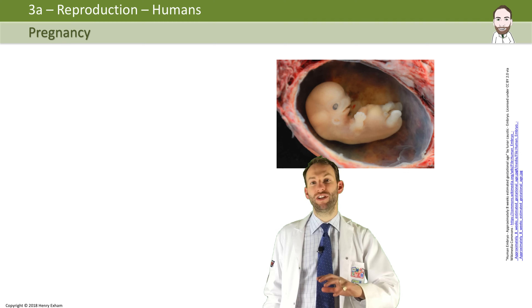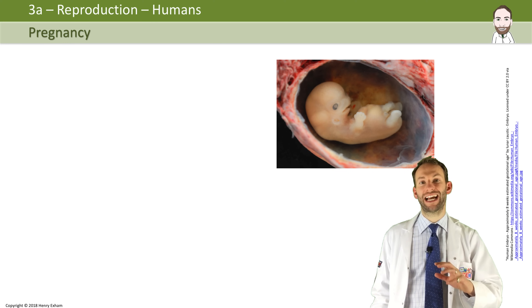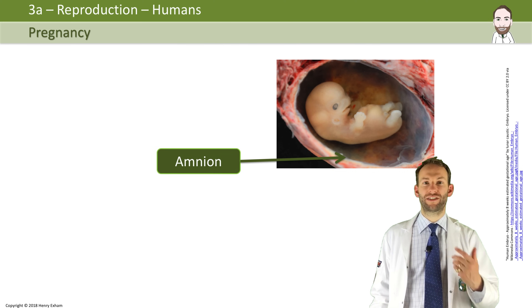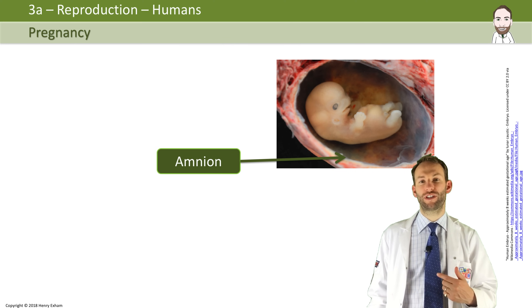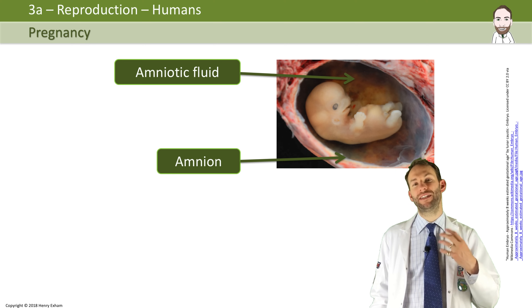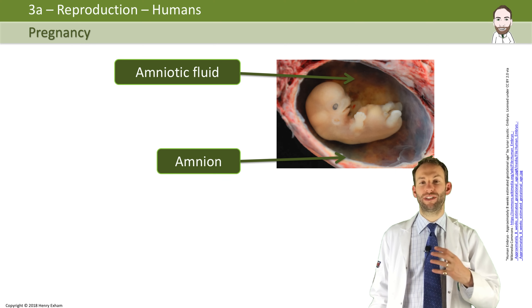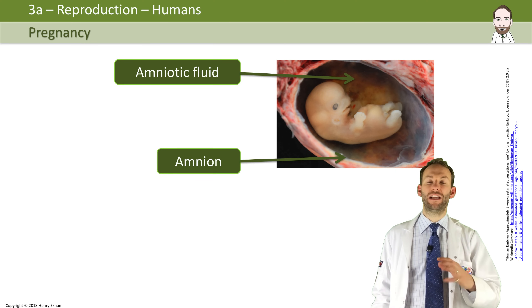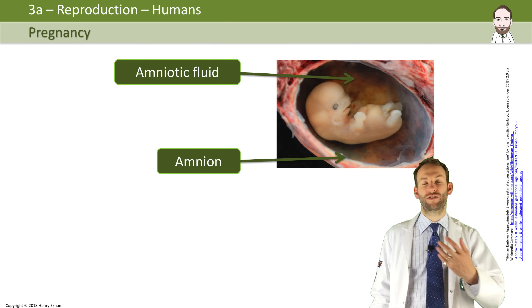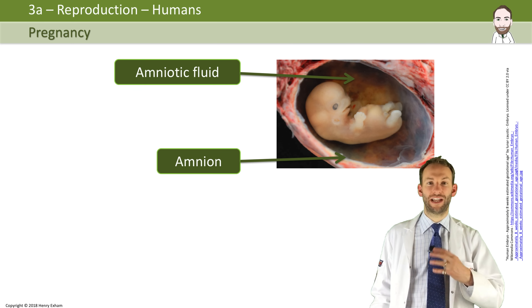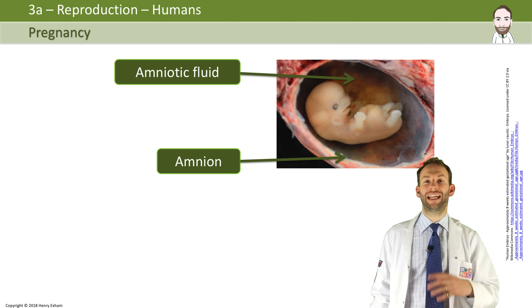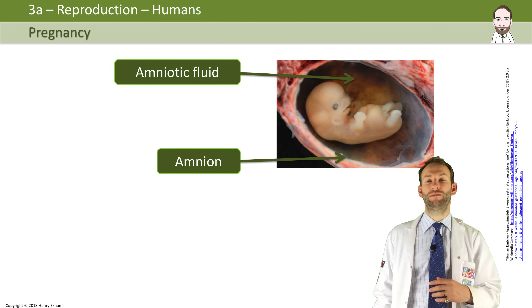During pregnancy, the amnion or amniotic sac encloses the whole developing embryo and secretes amniotic fluid, which protects the baby and helps it to develop. The baby can float in this fluid, essentially weightless, and develop nicely inside there. So we've got the amnion and the amniotic fluid.